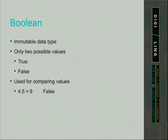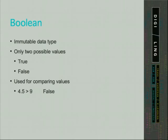Finally, the last data type we will cover in this lesson is Boolean. Booleans are immutable data types that only have two values: true and false. Usually they are used for comparing values. For example, we can check if 4.5 is greater than 9 — the program will return false. We can check if two values are equal, or if two values are not equal. In the lesson covering basic operators, we will learn comparison operators in Python.